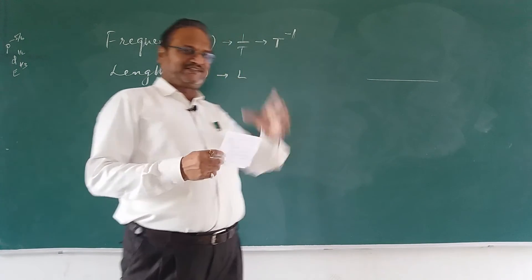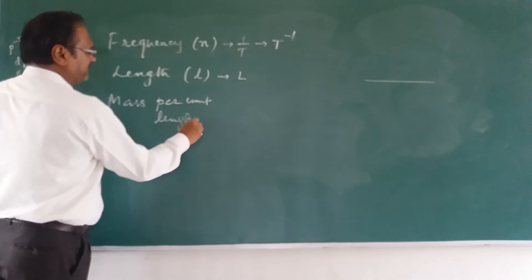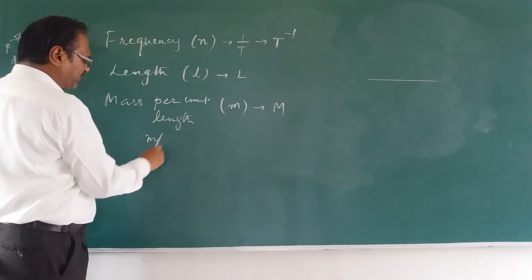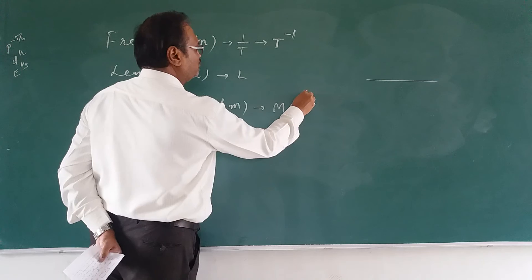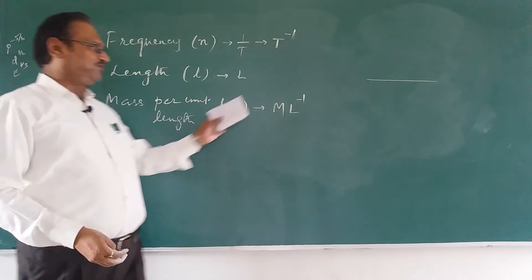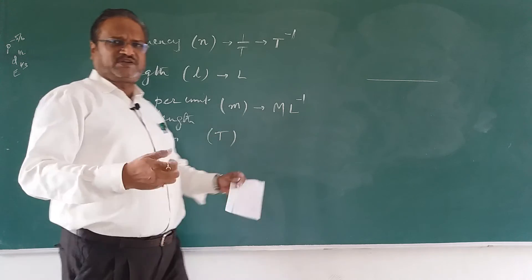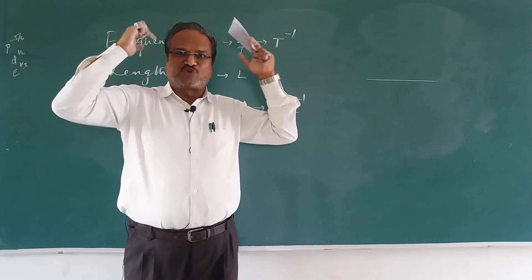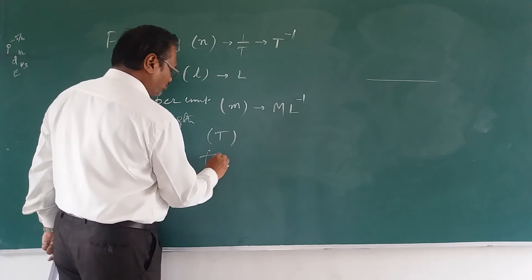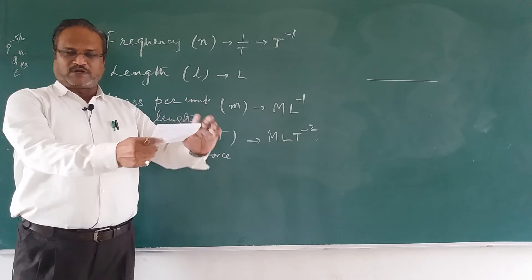Important note: the problem gives mass per unit length, not just mass. So its dimensional formula is M L power minus 1. Tension means the string is stretched, and that is nothing but force, with dimensional formula M L T power minus 2. Frequency is reciprocal of time period, so its dimensional formula is T power minus 1.